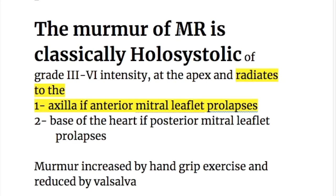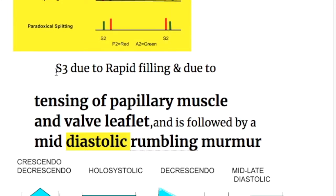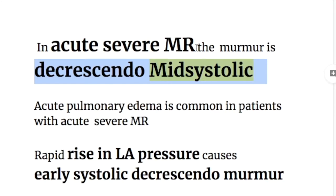There are three types of murmur in mitral regurgitation: the classical murmur is holosystolic at the apex, radiating to the axilla or base of the heart; the second is a mid-diastolic rumbling murmur following the third heart sound; and the third occurs in acute severe mitral regurgitation as a decrescendo midsystolic murmur.